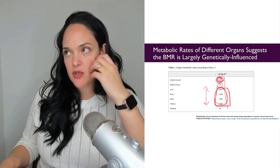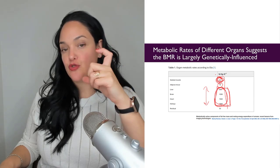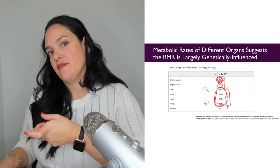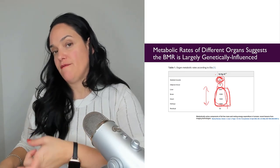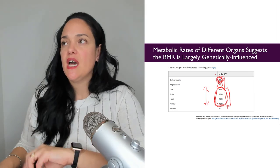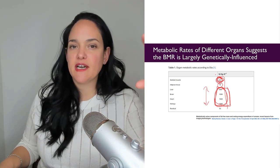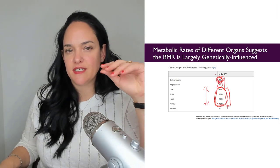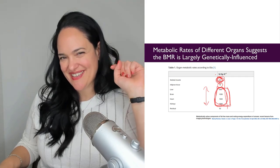So in the next couple of submodules, I want to look at the more controllable aspects of energy expenditure, the modifiable one in particular activity, physical activity. And I'm also going to look at something called the thermic effect of food, which accounts for about 10% of energy expenditure. So I'll see you in the next unit.